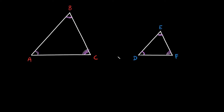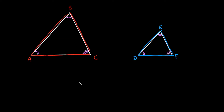Since they're the exact same shape, there are some cool things we can do with their sides to relate them to one another. Side AB corresponds to side DE, side BC corresponds to side EF, and side AC corresponds to side DF. Since they're similar triangles, that means they're proportional, and we can set up ratios between their sides.